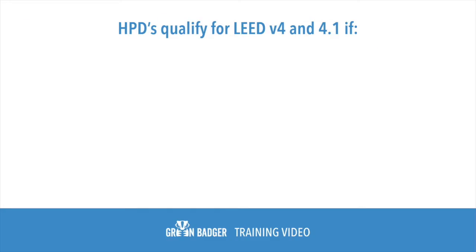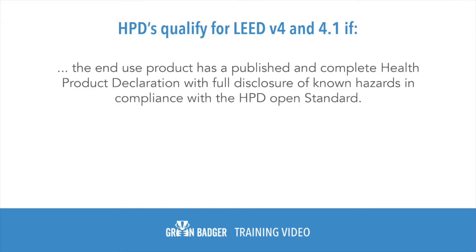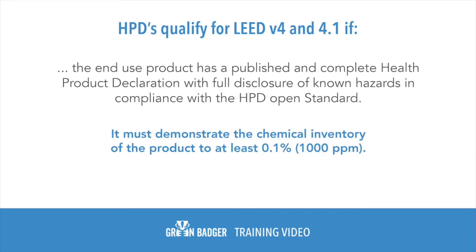HPDs qualify for LEED version 4 and 4.1 if the end-use product has published and completed a health product declaration with full disclosure of known hazards in compliance with the Health Product Declaration open standard, and must demonstrate the chemical inventory of the product to at least 0.1%, or 1,000 parts per million.